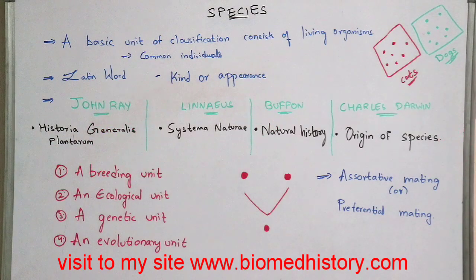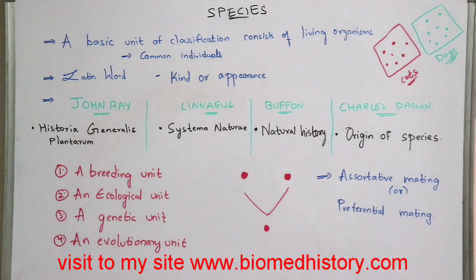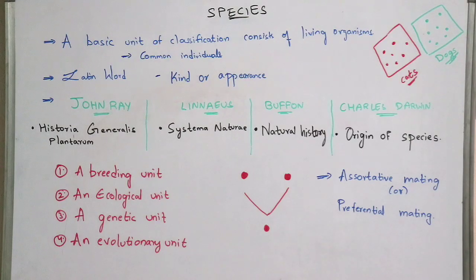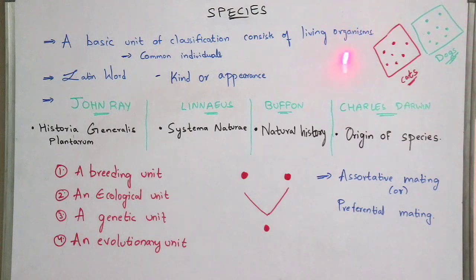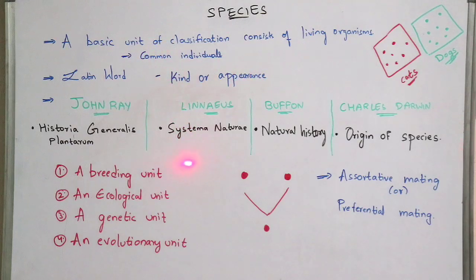Coming to the second one, Linnaeus wrote Systema Naturae. The main content of that book is that it indicates the basic unit of classification — it gives information on the basic unit of classification. All of that information was written by Linnaeus in the book called Systema Naturae.